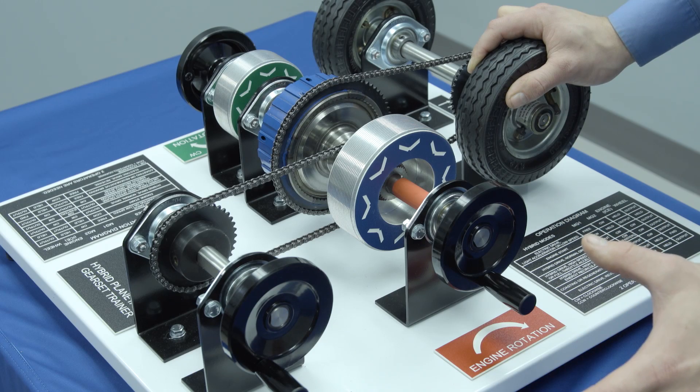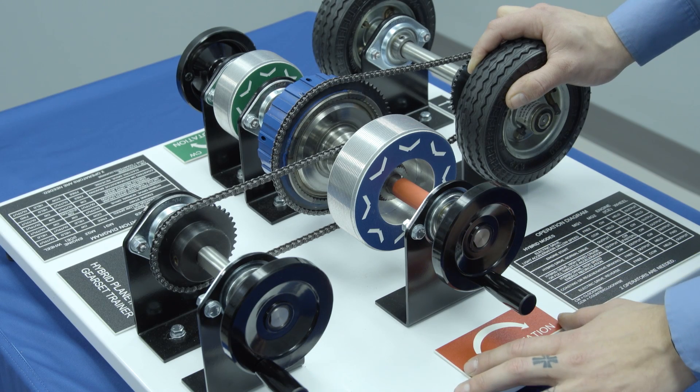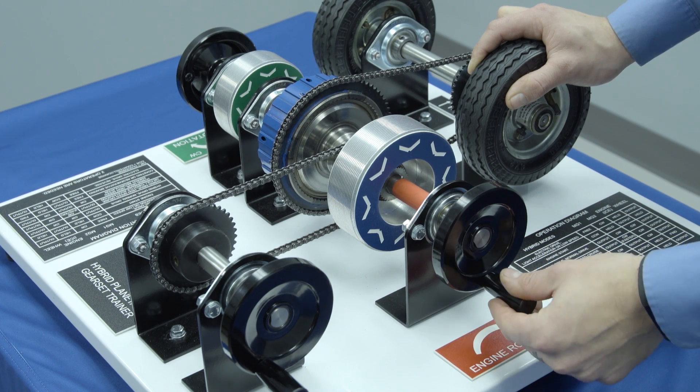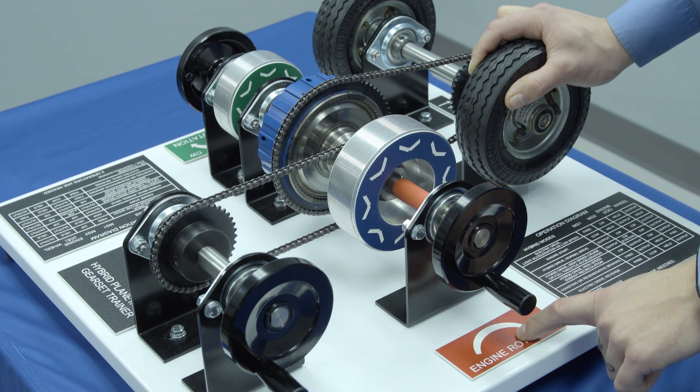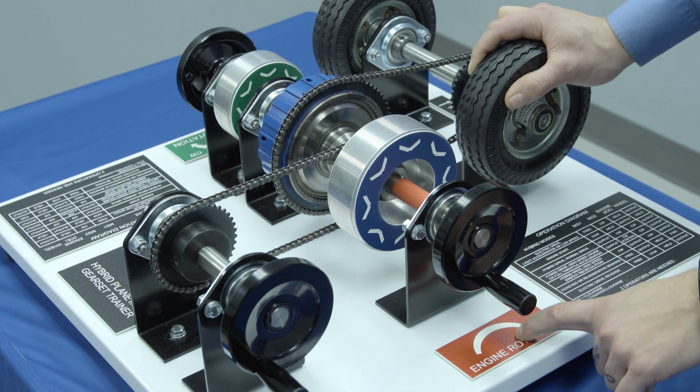Now let's take a look at the internal combustion engine. We have it located here, we can turn it with the handle. Remember, if you follow the arrow, the internal combustion engine is only ever going to rotate in one direction.